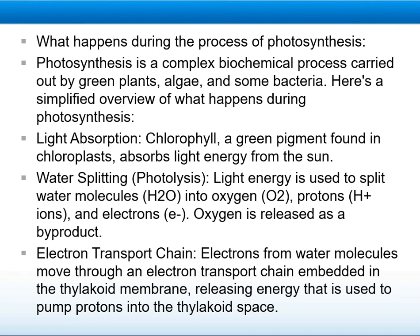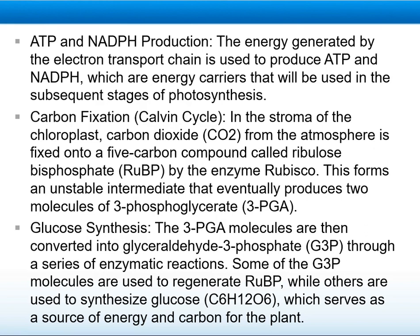Electron transport chain. Electrons from water molecules move through an electron transport chain embedded in the thylakoid membrane, releasing energy that is used to pump protons into the thylakoid space. ATP and NADPH production. The energy generated by the electron transport chain is used to produce ATP and NADPH, which are energy carriers that will be used in the subsequent stages of photosynthesis.